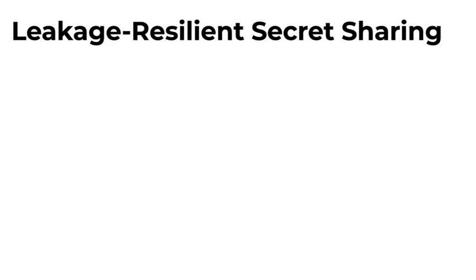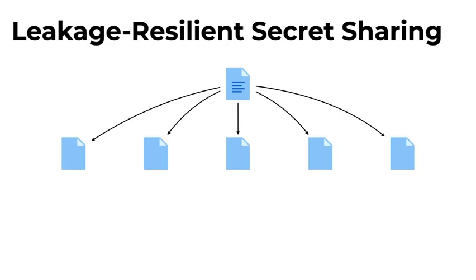Classical secret sharing notions such as plain secret sharing, verifiable secret sharing, or robust secret sharing all consider all-or-nothing adversaries that get full access to some of the shares and no access to some other subset of shares. A more recent line of works considers so-called leakage resilient secret sharing schemes, where the adversary is given some form of leakage from every single share — not any share in full, but some limited amount of information from each share.